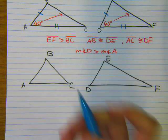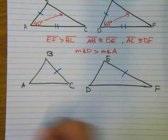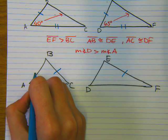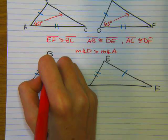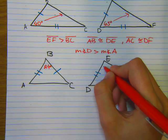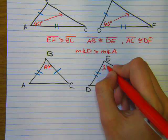I'll say that BC is congruent to EF, and then AB is congruent to DE. And my included angle would be, let's say, I'll call this one 24 degrees, and let's say this one is 22 degrees.